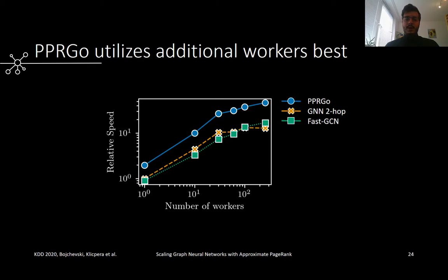Another important aspect we wanted to evaluate is how much do different models benefit from using additional computation. Specifically, we show a relative speed compared to a two-hop GNN model using a single-worker machine. We see that PPR-GO utilizes the additional workers the most and has the highest relative speed. In comparison, both the two-hop GNN model and the recently proposed fast GCN model lag behind.